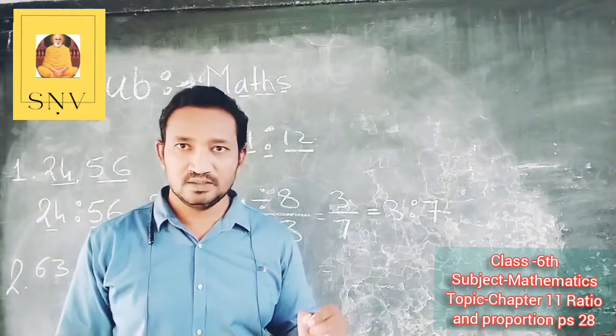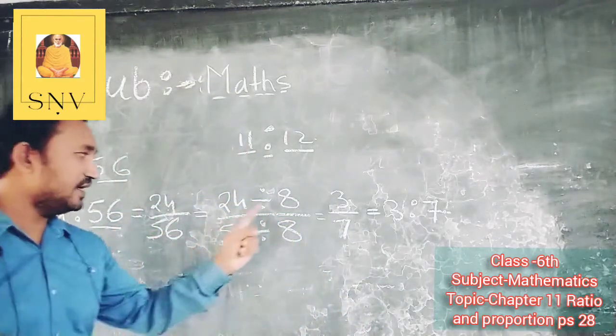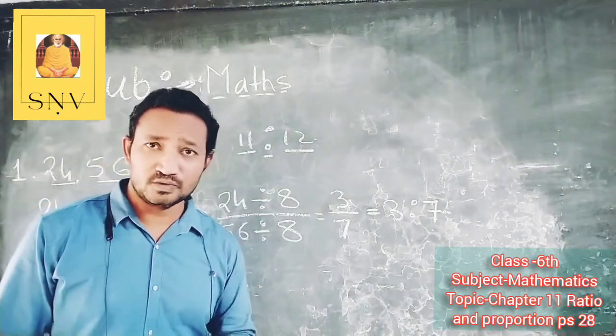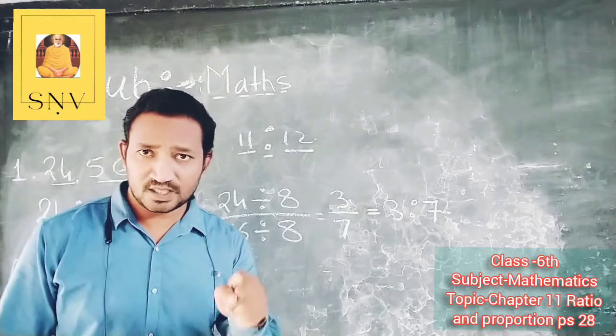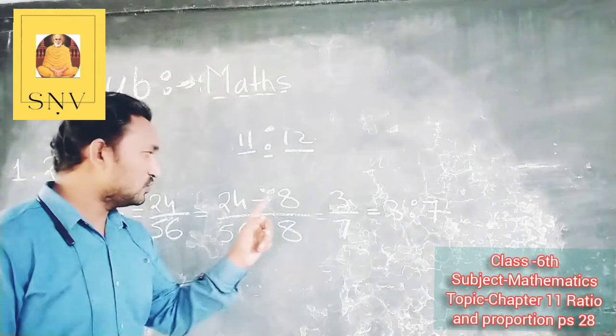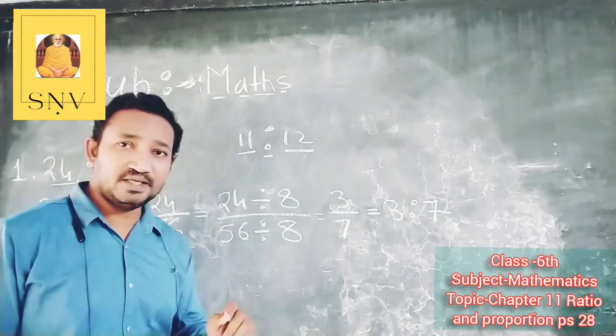So students, here we have to open your text book. This is the first problem. So 8 threes are 24 and 8 sevens are 56.